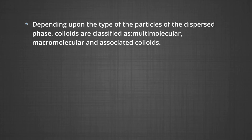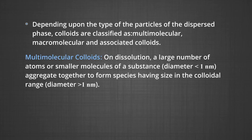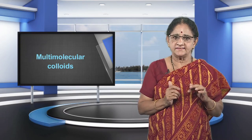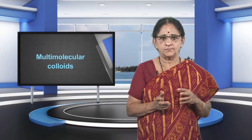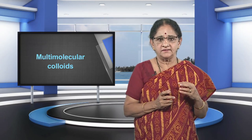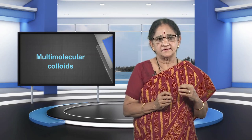Depending upon the type of particles of the dispersed phase, colloids are classified as multi-molecular, macromolecular, and associated colloids. Multi-molecular colloids: on dissolution, a large number of atoms or smaller molecules of a substance with diameter less than 1 nanometer aggregate together to form species having size in the colloidal range (diameter greater than 1 nanometer). For example, a gold sol may contain particles of various sizes having many gold atoms. Sulphur sol consists of particles containing a thousand or more S₈ sulfur molecules.